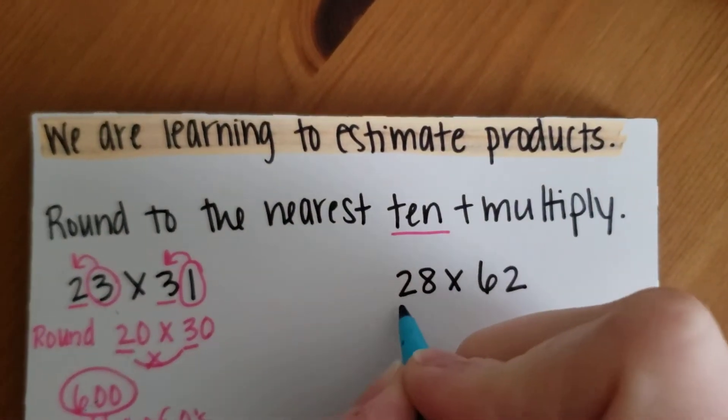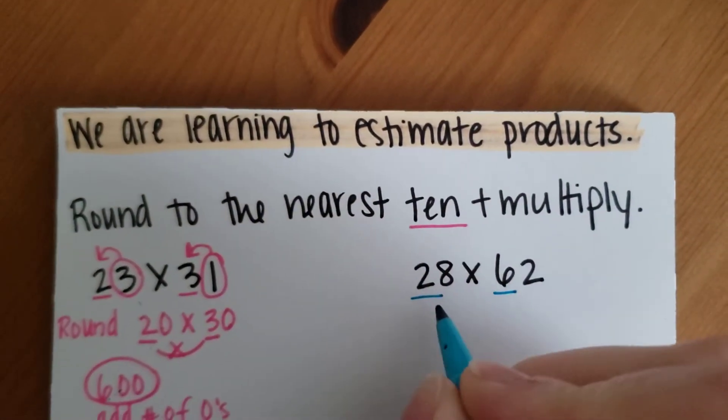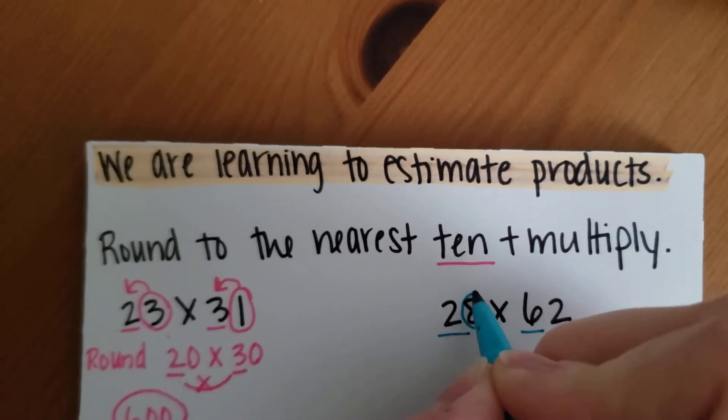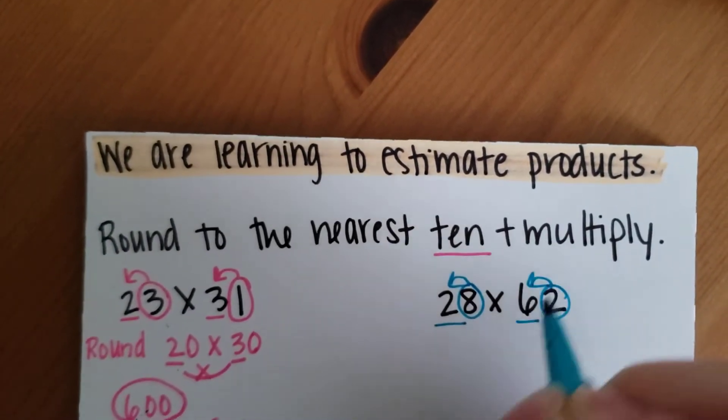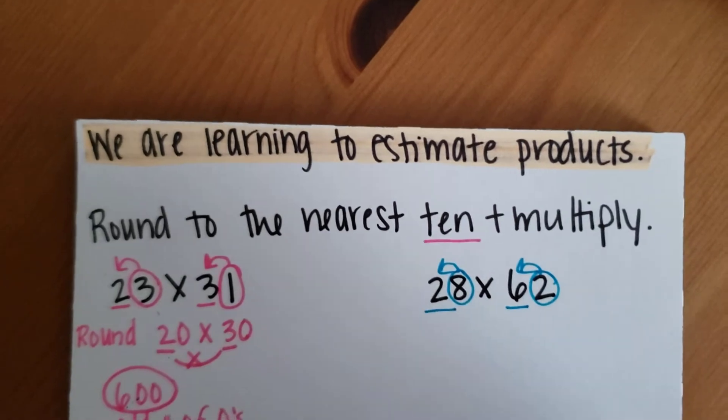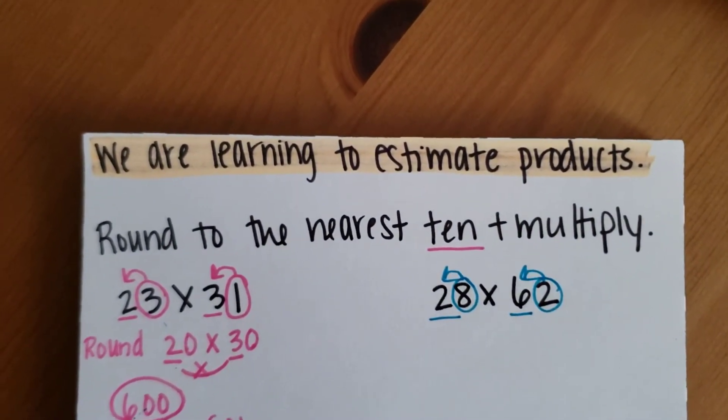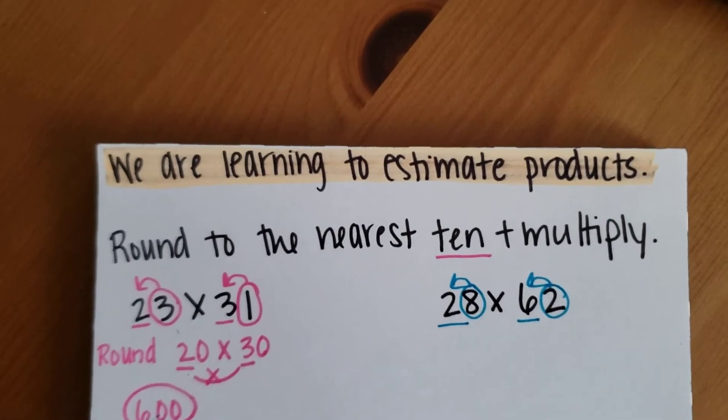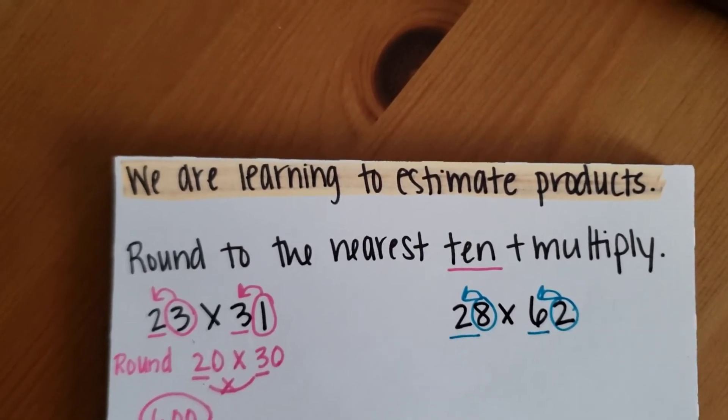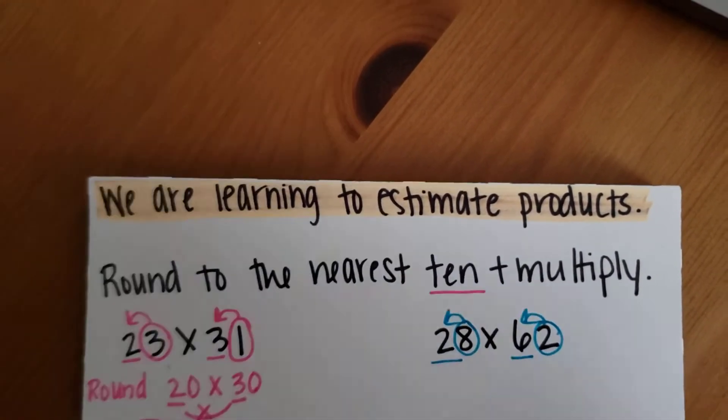So I'm rounding to the 10 spot. My 2 and my 6 are in my 10 spot, so these are the numbers that are going to tell me what to do. So an 8, remember that 4 or less, you let it rest. 5 or more, raise the score.